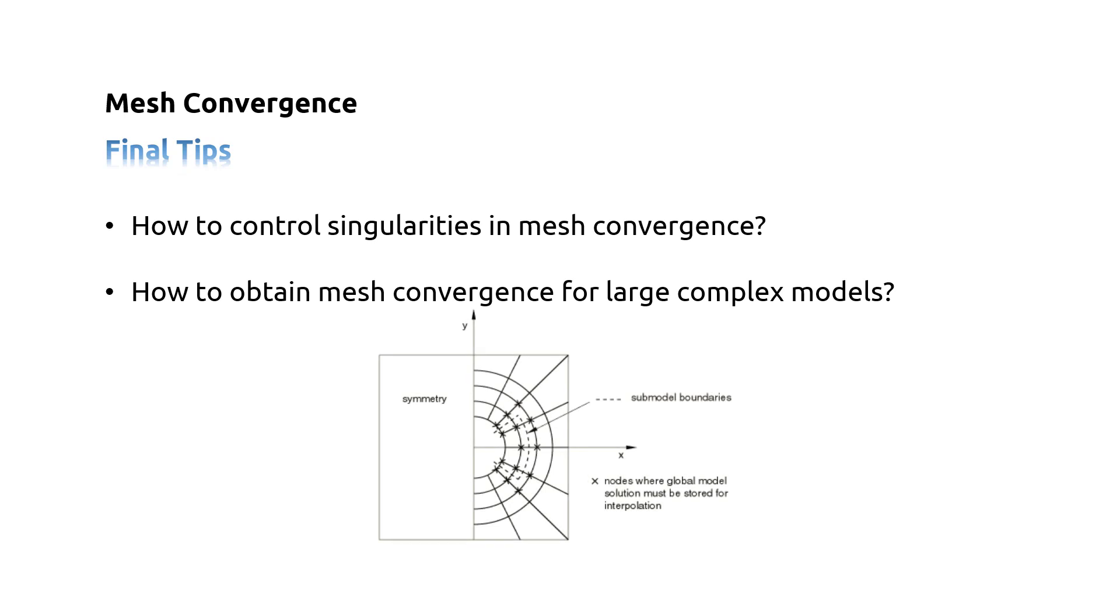Abaqus provides an advanced feature called sub-modeling that allows you to obtain more detailed and accurate results in a region of interest in the structure. The solution from a coarse mesh of the entire structure is used to drive a detailed local analysis that uses a fine mesh in this region of interest.